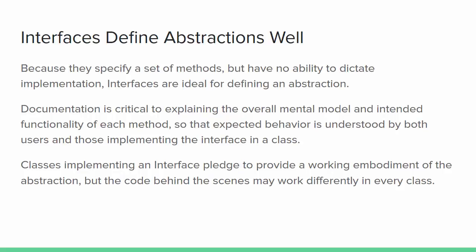Interfaces are ideal for defining an abstraction. Interfaces define expected behavior from objects that implement the interface without having any say in how those behaviors will be implemented. Any object that implements the interface could be assigned to a polymorphic reference of that interface type. At the time you call a method using that interface, you may not even know what object is found at the other end of the reference, but as long as it does the expected job, you can use it and move on.